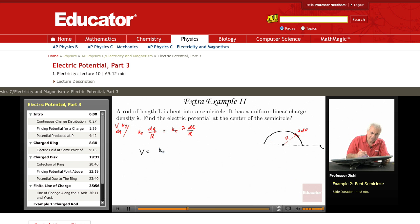So it's ke lambda over r, integral of DL. But everything is constant here—ke, lambda, and r are constant. So this is just ke lambda over r integral of DL. Integral of DL means adding up all the DL's.